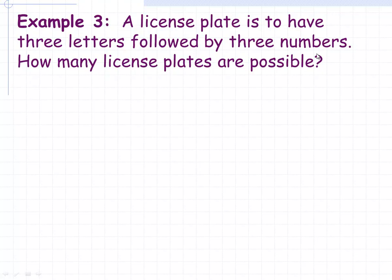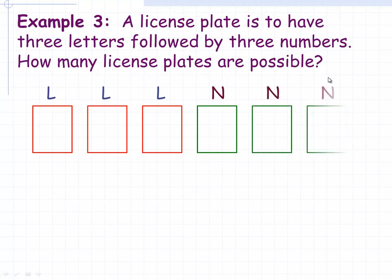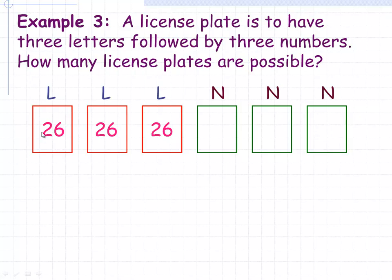In example three, we have a license plate where plates are three letters followed by three numbers. The question is how many license plates are possible with no restrictions. There are 26 letters in the alphabet, so each letter position can be selected in 26 ways. If there was a restriction where letters had to all be different, it would be 26, then 25, then 24. But there is no restriction here, so they're all 26s.